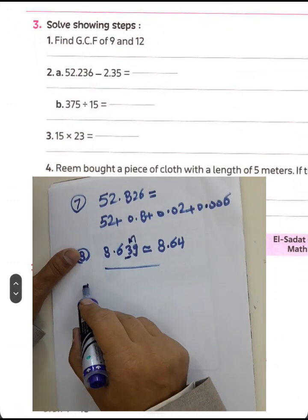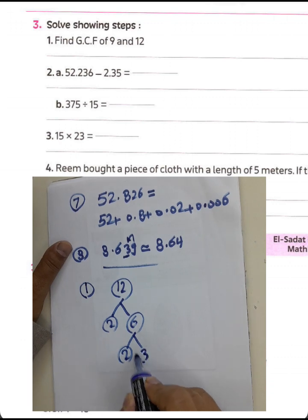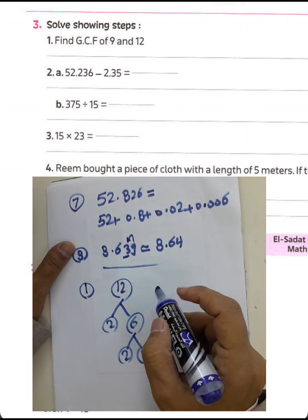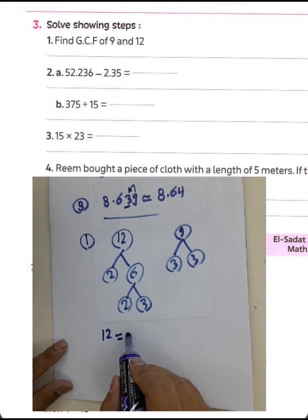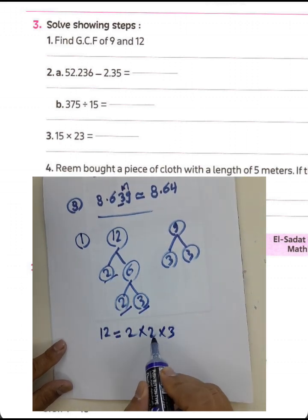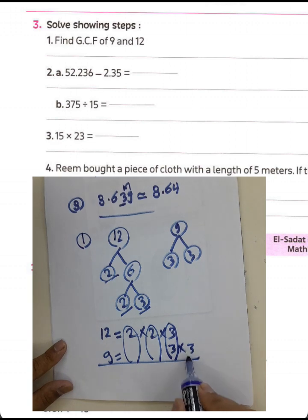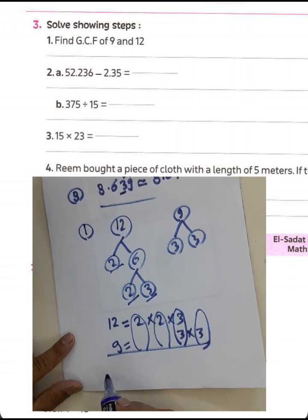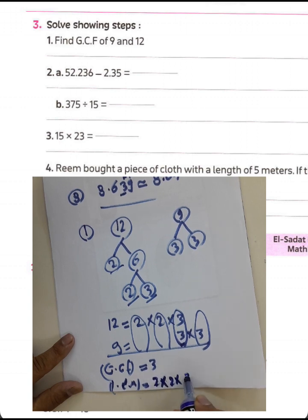Question 9: Find the greatest common factor (GCF) of 9 and 12. Factor: 12 equals 2 times 2 times 3, and 9 equals 3 times 3. The common factor is 3, so GCF equals 3. The least common multiple (LCM): choose all digits from each factor circle — 2 times 2 times 3 times 3 equals 4 times 9 equals 36.